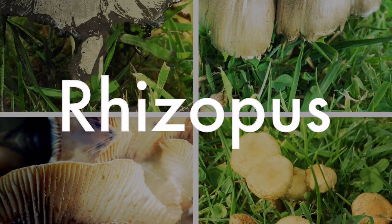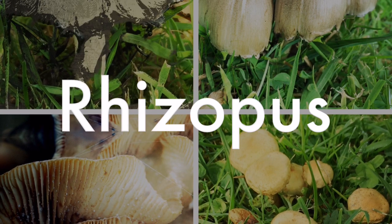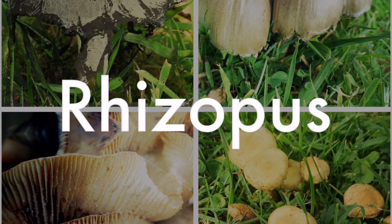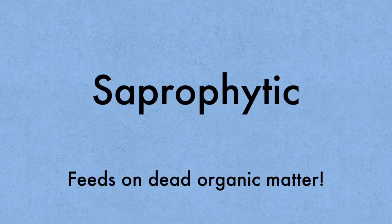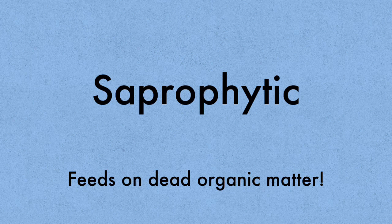You have two fungi to learn about in detail. The first of which is rhizopus, otherwise known as bread mold. Rhizopus is saprophytic or a saprophyte, meaning that it feeds on dead organic matter. It's usually found growing on bread and on fruit.